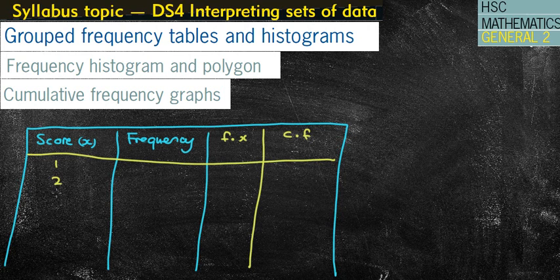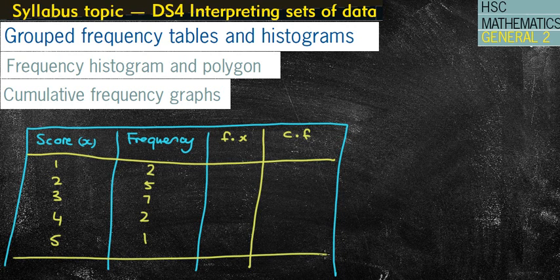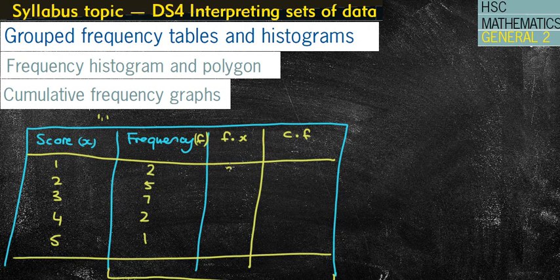For the most part, we have used previously single data like this, and often you're given the frequency like 2, 5, 7, 2, 1, for example, and then you're asked to complete the table. So fx means frequency multiplied by the score column — that's because we're using this for the mean, looking at what the total scores are going to be. If I've got two lots of 1, so two scores of 1, that means I've got 2.